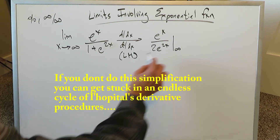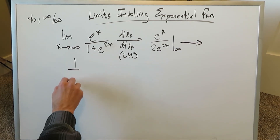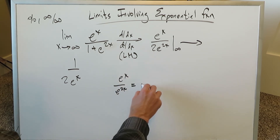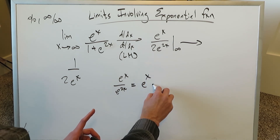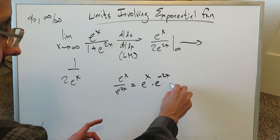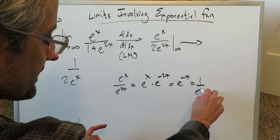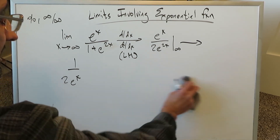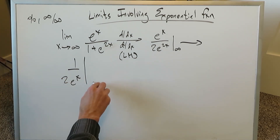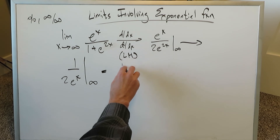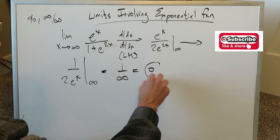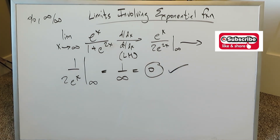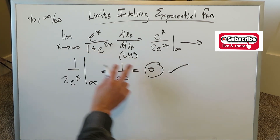Simplifying: e to the x divided by 2e to the 2x. Using laws of exponents, e to the x divided by e to the 2x equals e to the x times e to the minus 2x, which is e to the minus x, which equals 1 over e to the x. So the entire expression reduces to 1 over 2e to the x. Plugging in infinity: 1 divided by infinity equals 0. The limit of this function as x approaches infinity is 0.